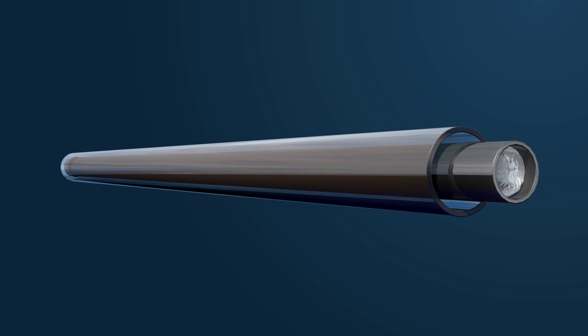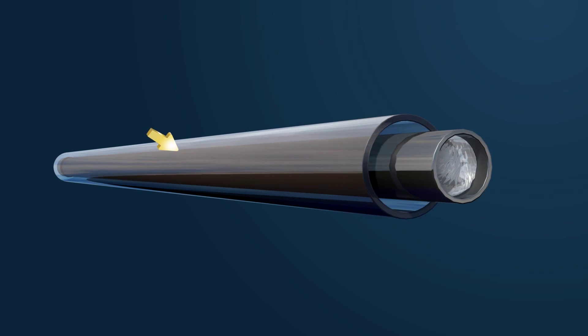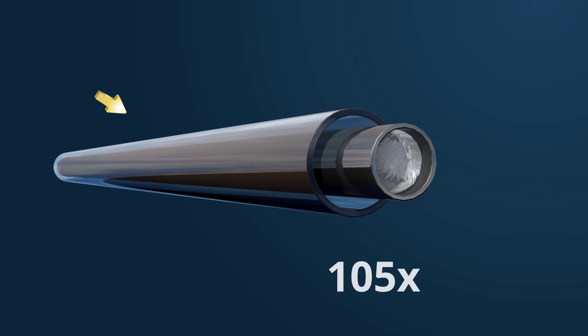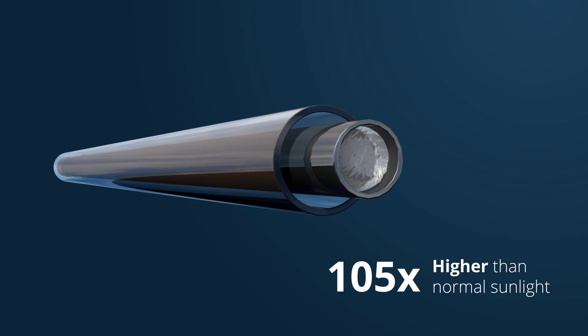When sunlight is reflected by the silver reflector, the temperature at the focal point is 105 times higher than normal sunlight.